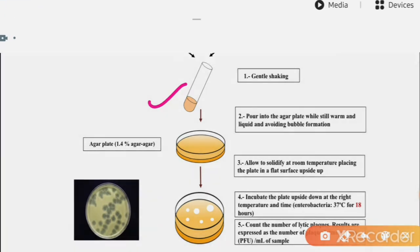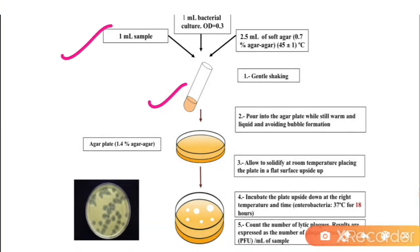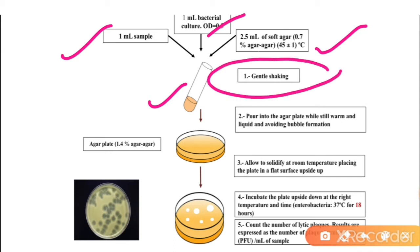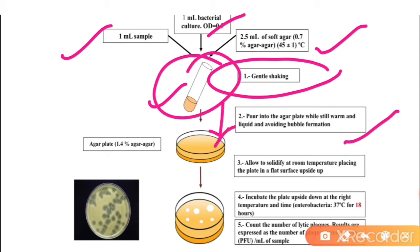To perform the plaque assay, take one test tube and add 1 ml of sample, 1 ml of bacterial culture with 0.3 optical density, and 2.5 ml of soft agar. Shake the test tube, then pour the mixture into the agar plate while still warm and liquid, avoiding bubble formation.